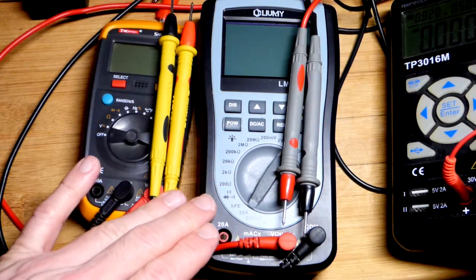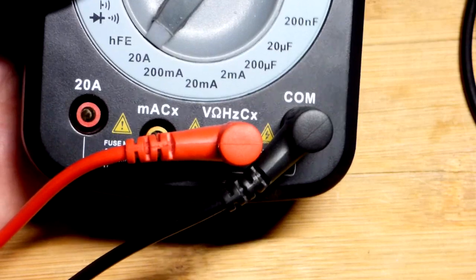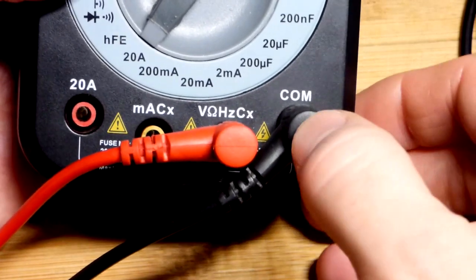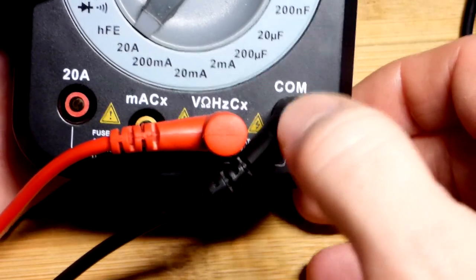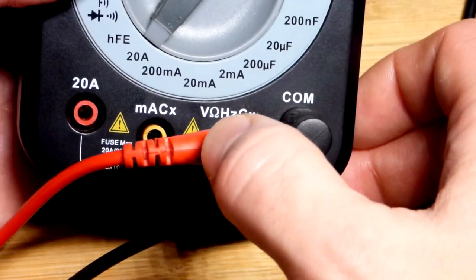In this video we're going to take a look at measuring resistance with a multimeter. We're going to start with the non-auto-ranging meter. First we want to make sure the probes are in the right spot, so black goes to common there, and red goes to where you have the omega symbol for ohms.